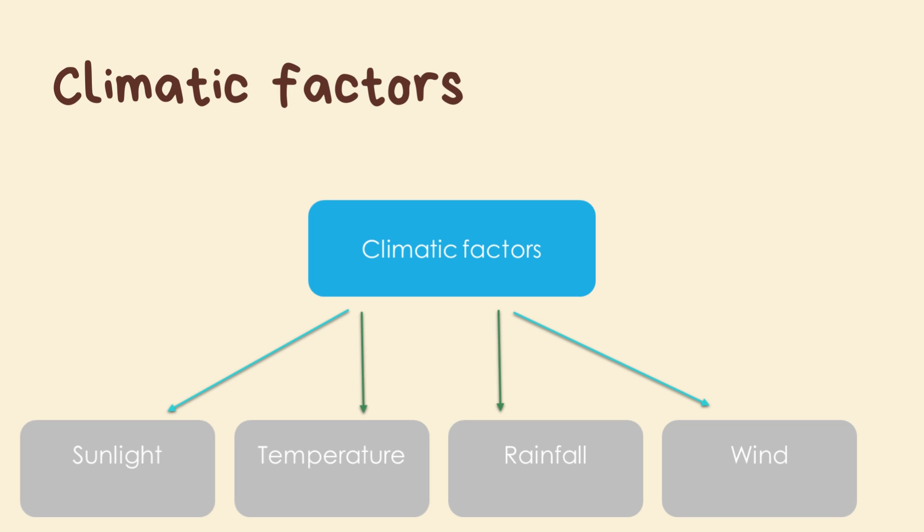Coming to climatic factors: sunlight is important because plants need it to photosynthesize. Without sunlight, most plants will not photosynthesize, and most animals will therefore be deprived of food. Temperature — how hot or how cold the air is — decreases as we move from the equator towards the poles, affecting both plant and animal life. Rainfall also plays a huge role in both plant and animal life, as does wind.